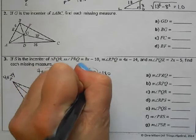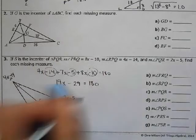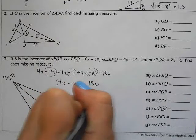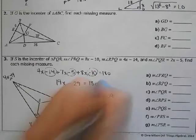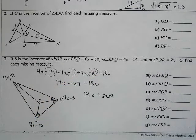So add 29, get 209. So x equals 11. So now that's what we're going to work with.